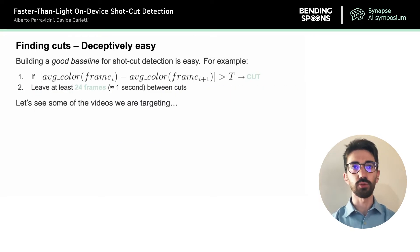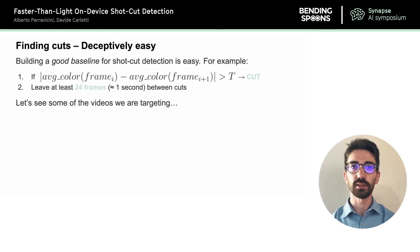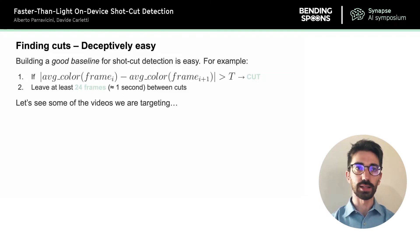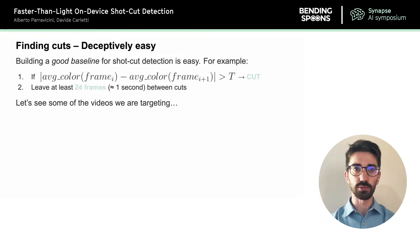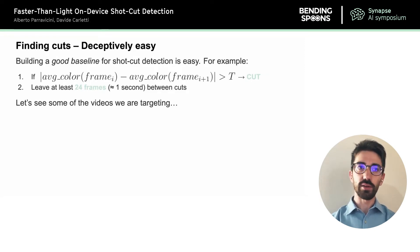If you think about this problem for a few minutes, you'll immediately think of a few baseline algorithms that can identify the location of each cut. For example, you can look at the difference of average RGB values of subsequent frames and mark a frame as a cut if the difference is above a threshold. You can also say you won't add any other cut for the next 24 frames, which is what would usually happen for movies. However, looking at real videos, this assumption might not always hold.